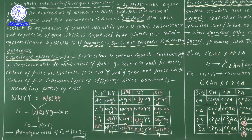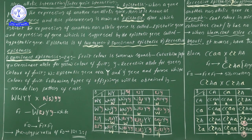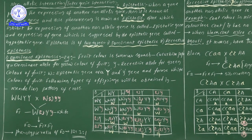Means here, one gene will go and suppress another gene's activity and expression. Such a phenomenon is what we consider as an epistatic gene. Before identifying the definition, we must remember the meaning of epistasis and what this phenomenon is — then only we can identify it.